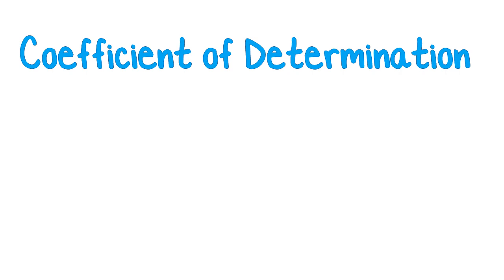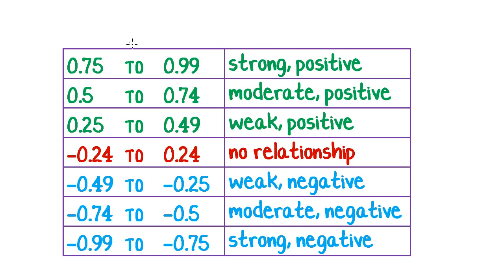This tutorial is going to look at the coefficient of determination, which is represented by r squared. In the last tutorial we looked at r values and how these talked about the relationship of a scatterplot, the independent variable to the dependent variable.